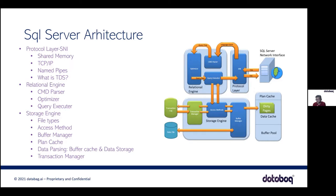The query executor, as the name suggests, executes the query. These are the main parts of the relational engine of SQL server. Then comes the storage engine. As the name suggests, storage is the main key part of SQL server where data is stored. There are multiple components to the storage engine: file types, access method, buffer manager, and plan cache.